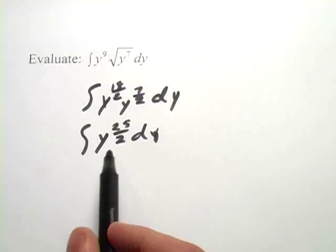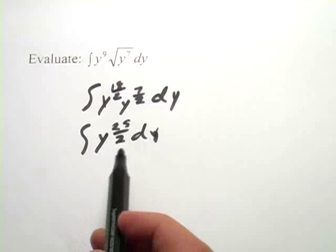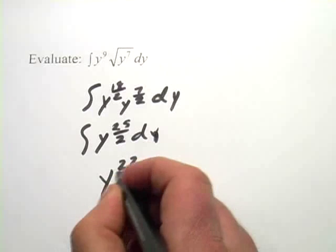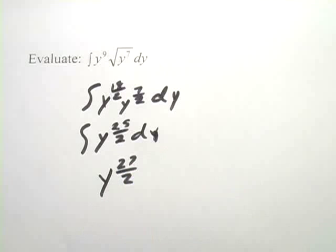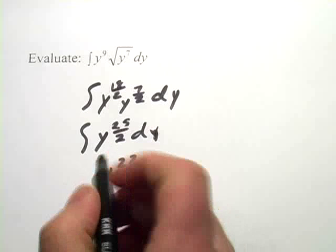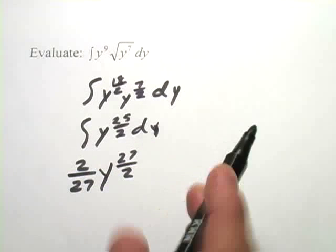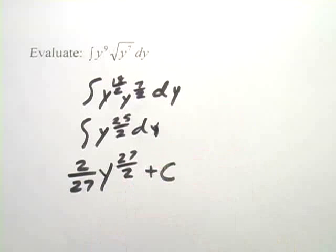Now that's a little bit easier to take the integral of. When we increase the power here by 1, that becomes 27 halves. So we have y to the 27 halves. And then we have to multiply by the reciprocal. So 2 27ths y to the 27 halves. And of course, plus C, our constant.